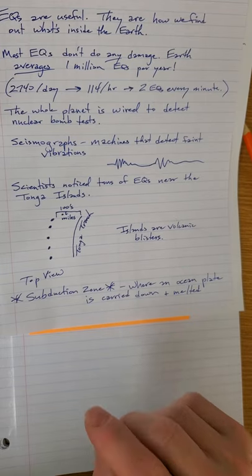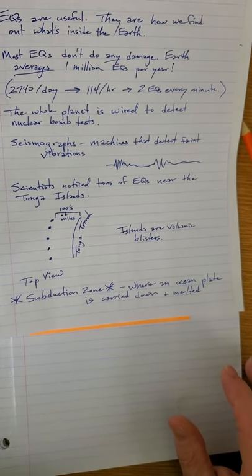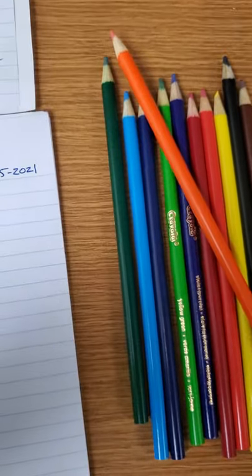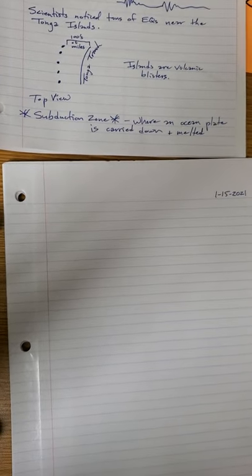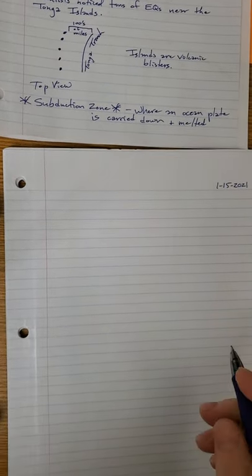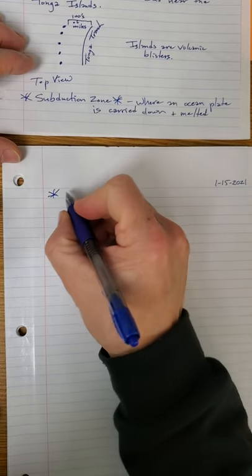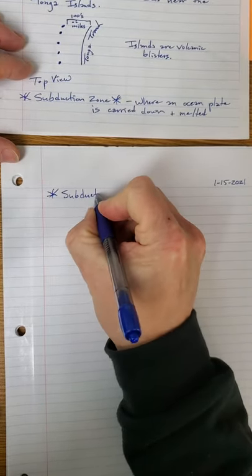A subduction zone is important on Earth because that's where 80% of Earth's volcanoes are created at subduction zones. So start some notes. You don't have much writing today. It's going to be drawing, and you're going to want colored pencils.